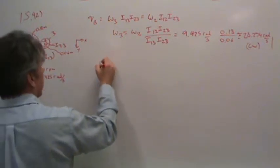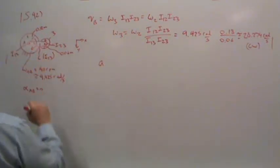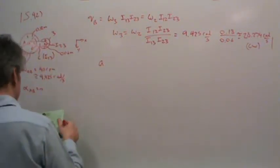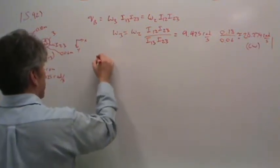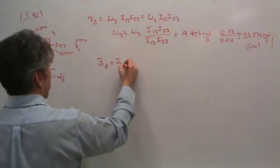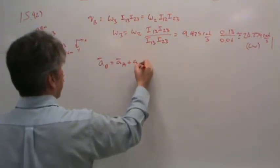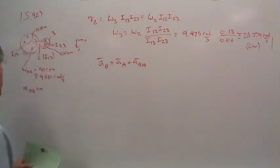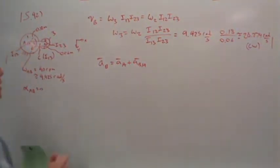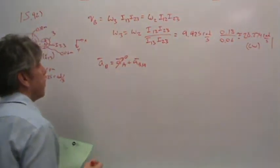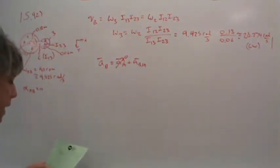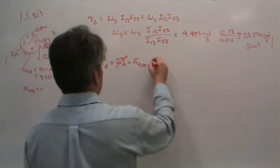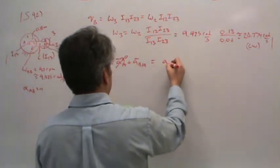We were asked for the acceleration of point C. But we can't really get that yet. We need the acceleration of point B first. The acceleration of point B would be equal to the acceleration of point A plus the relative acceleration between B and A. The acceleration of A is exactly zero. It is a grounded point. So there's no acceleration of body A.